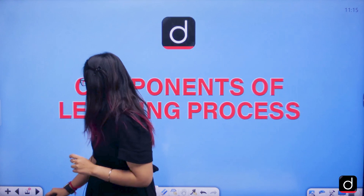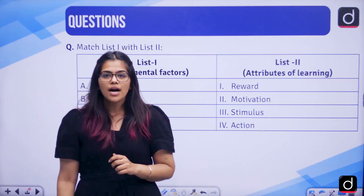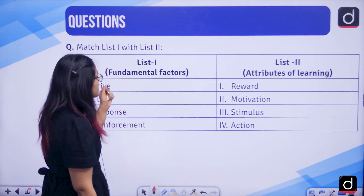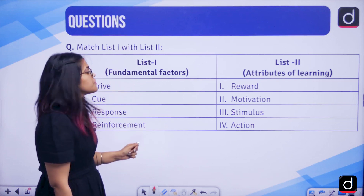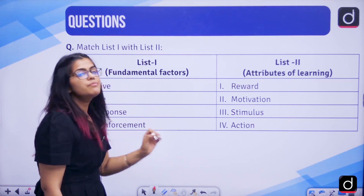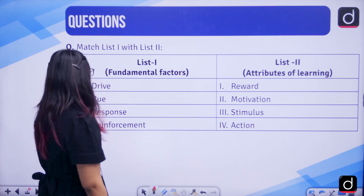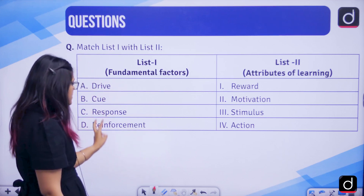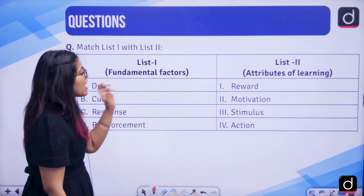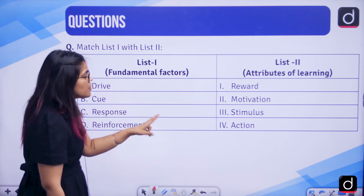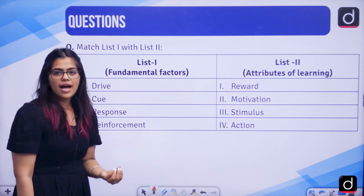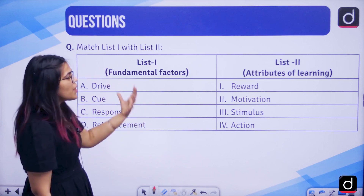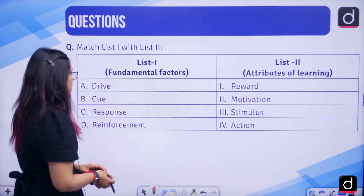Let me show you the question. This was asked in your exam 2022. The fundamental factors are given in List 1 and the attributes of learning are given in List 2. We have drive, cue, response, and reinforcement in List 1, and we have reward, motivation, stimulus, and action in List 2. How will you connect the dots — how will you join List 1 and List 2?